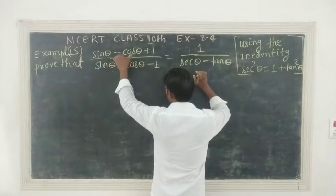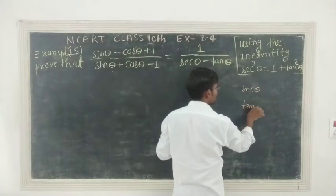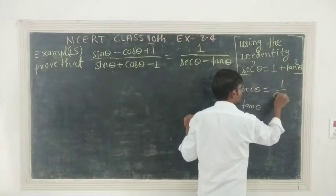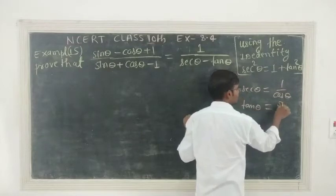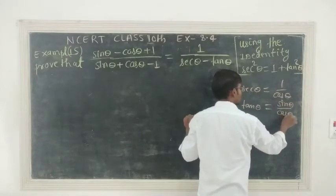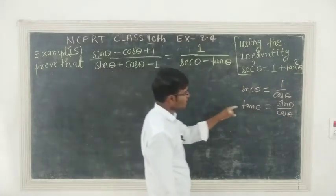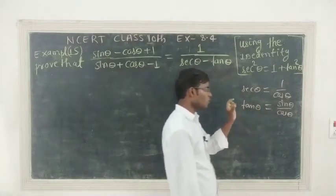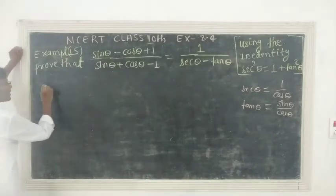Let us see what the sine of theta actually means. The sec theta is equal to 1 by cos theta and sine theta is equal to sine theta. If the sine theta should be equal to denominator in the denominator, then we must be equal to cos theta.